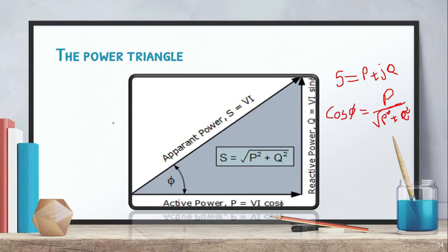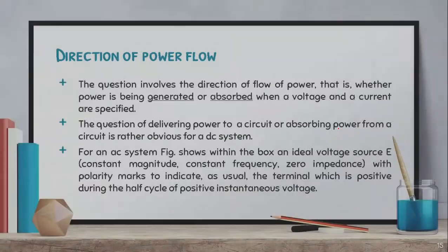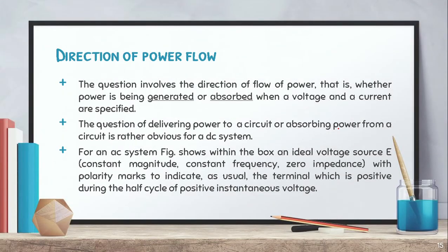For several loads connected in parallel, the total P is the sum of average powers of individual loads, plotted along the horizontal axis for graphical analysis. For an inductive load, Q is drawn vertically upward since it is positive. The phase angle between voltage and current is the power factor angle theta, and the power factor can also be found using the corresponding equation.